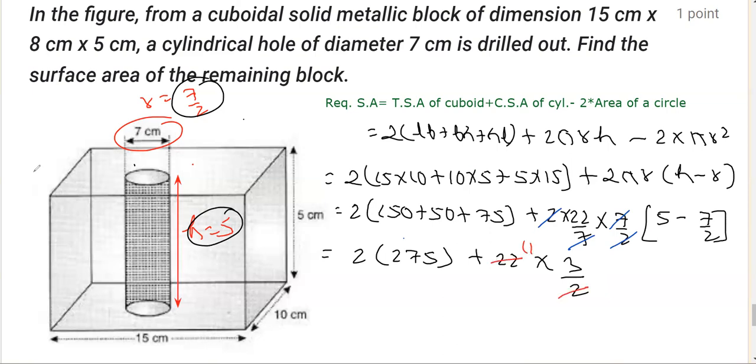These can be reduced. If I multiply, this is 550, and then this is 33, so it's going to be 583 centimeter square, and that should be the required surface area.